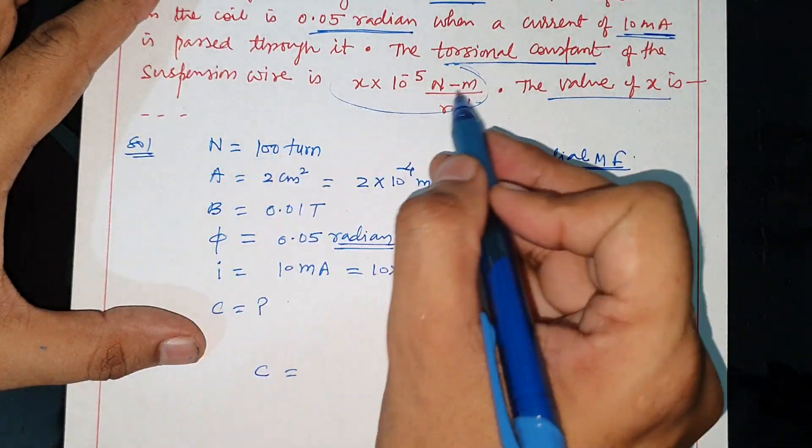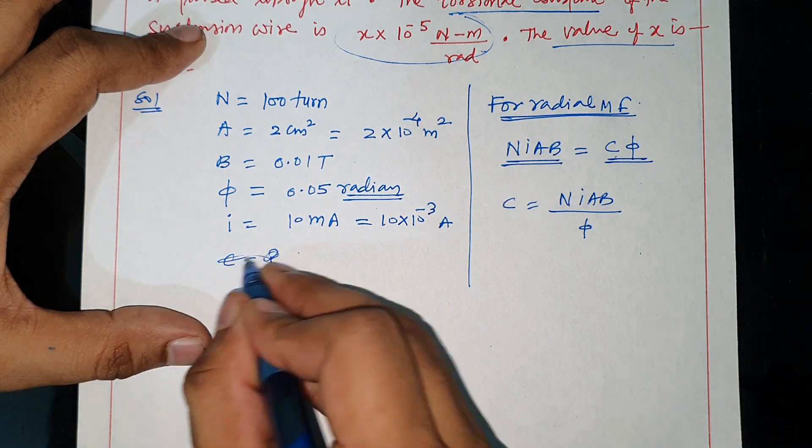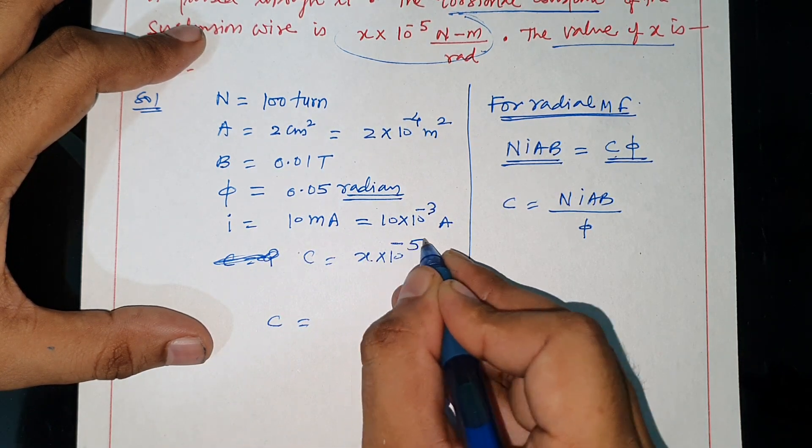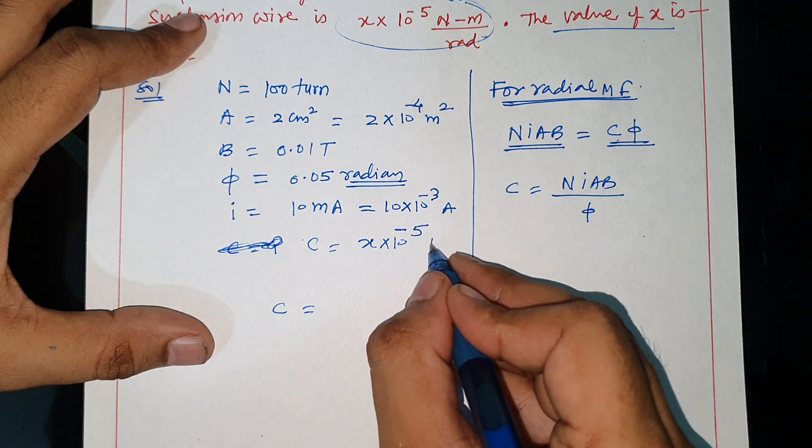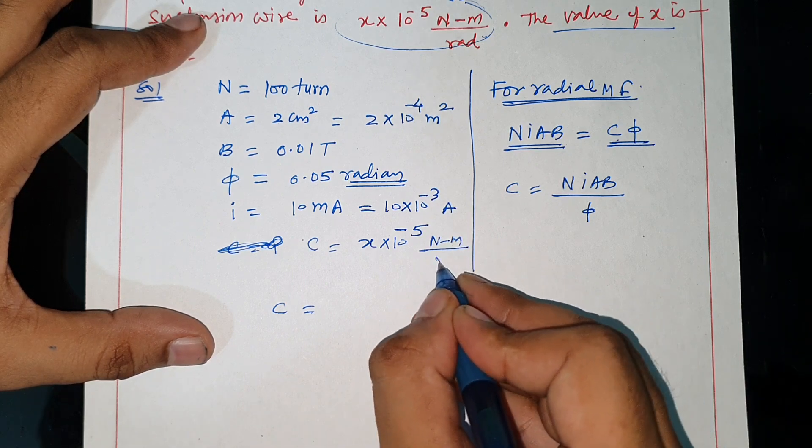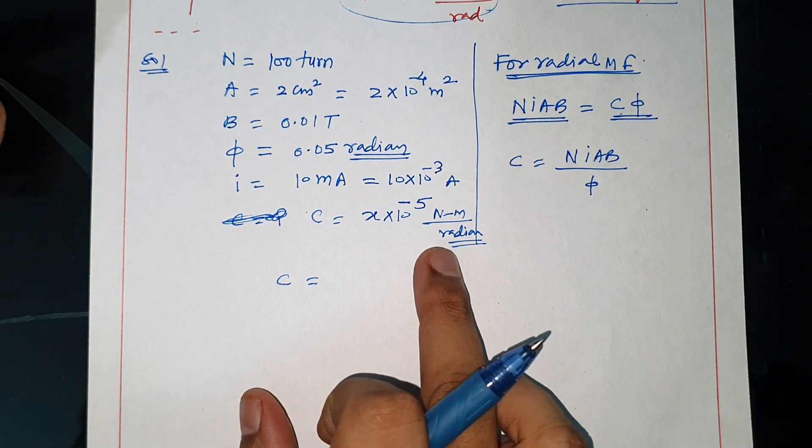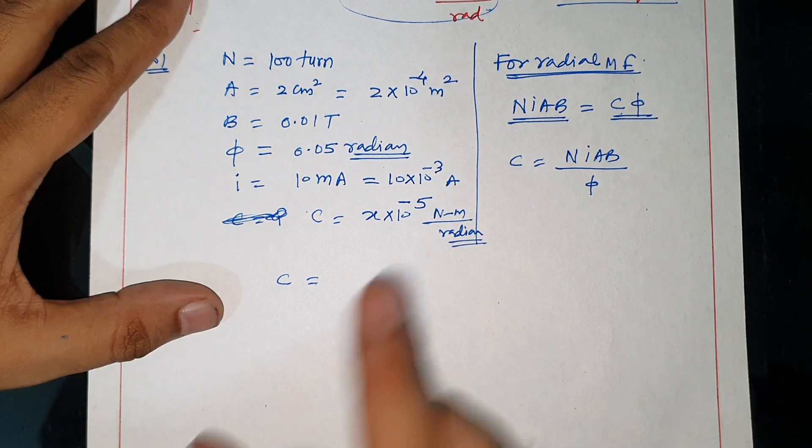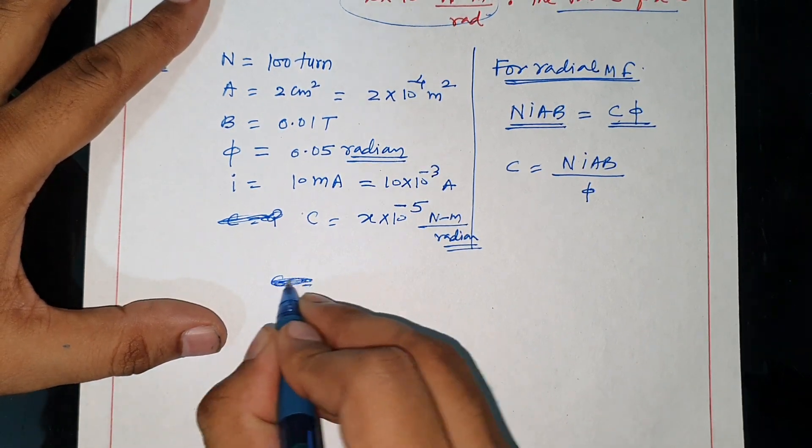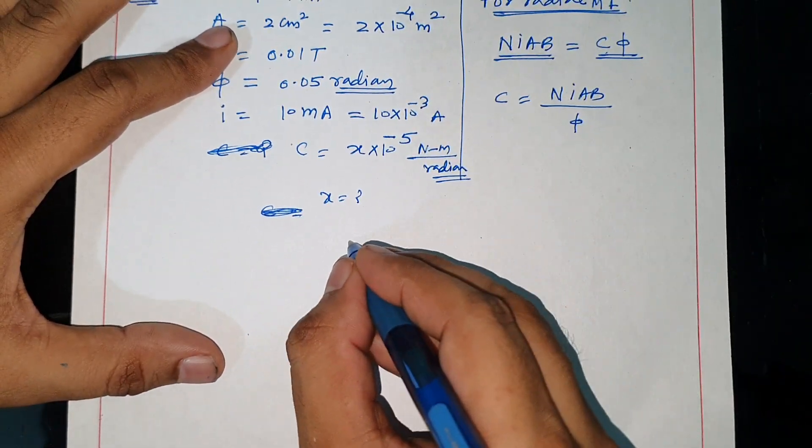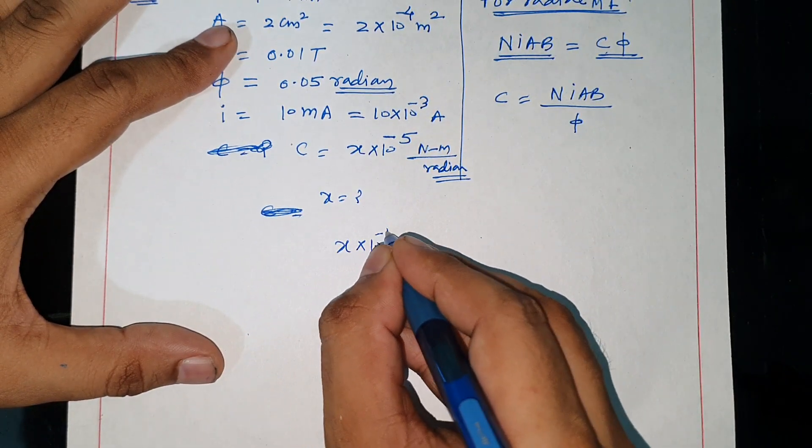Torsional constant C is given as x into 10 power minus 5 newton meter per radian. This is how much torque per radian - that's called torsional constant. C is not being asked, x is being asked. Let's put the value of C: x into 10 power minus 5.